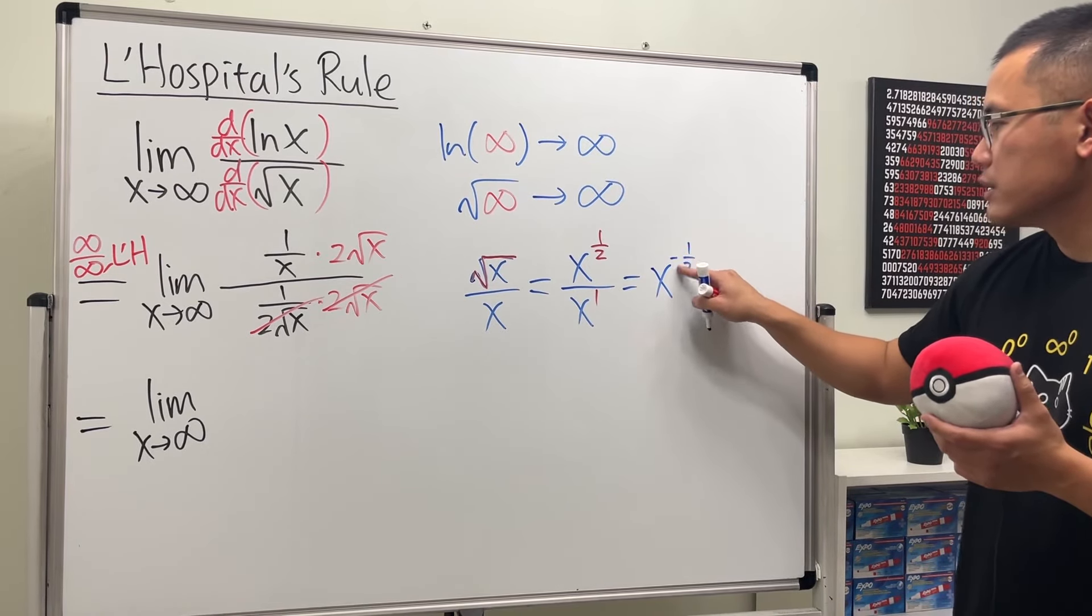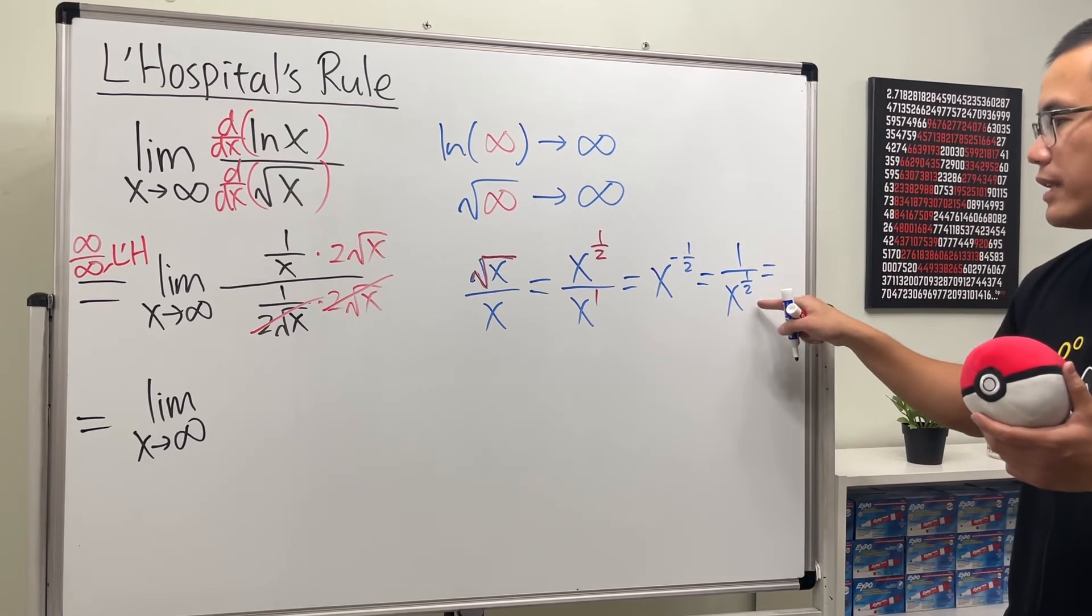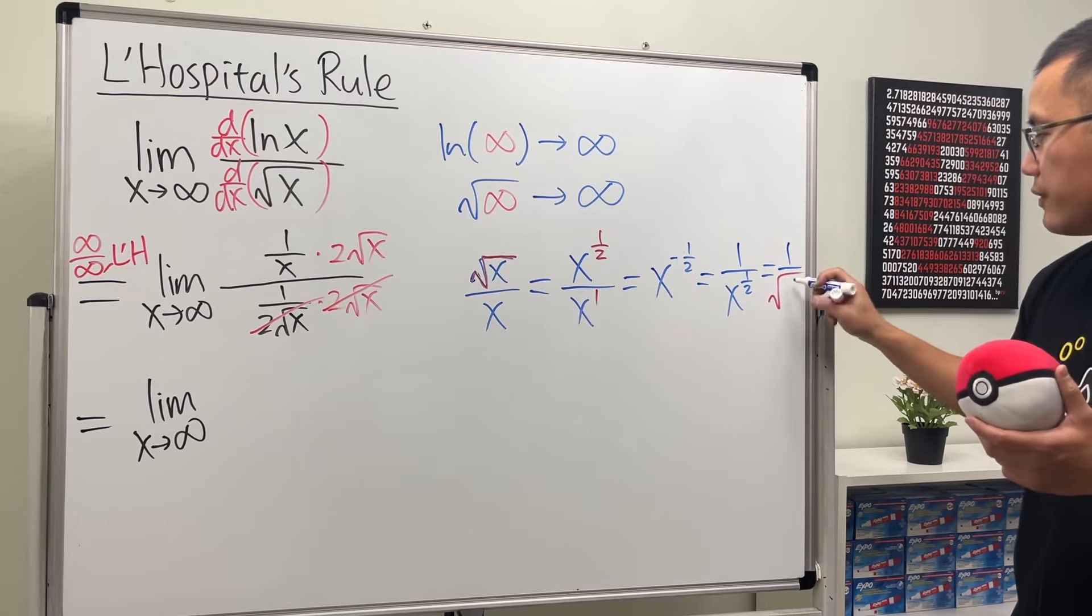And that means we can just bring this power down to the bottom and make it positive. And you can write that back as a square root, so 1 over square root of x.